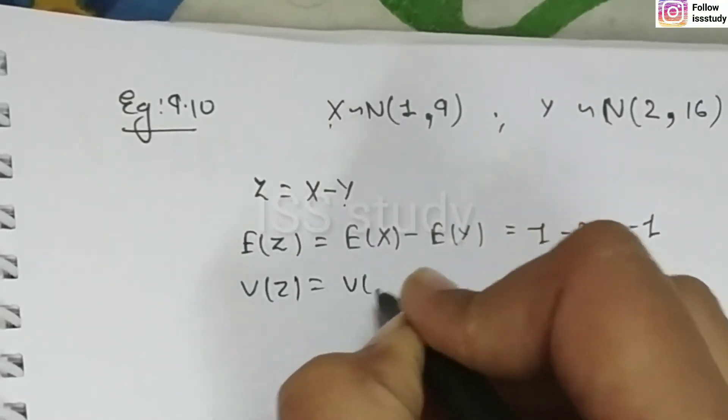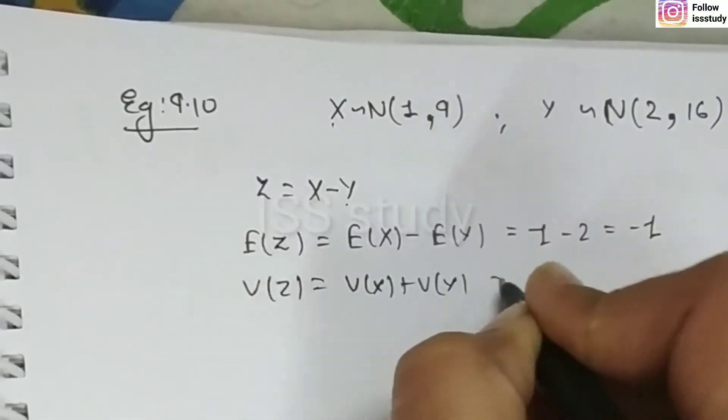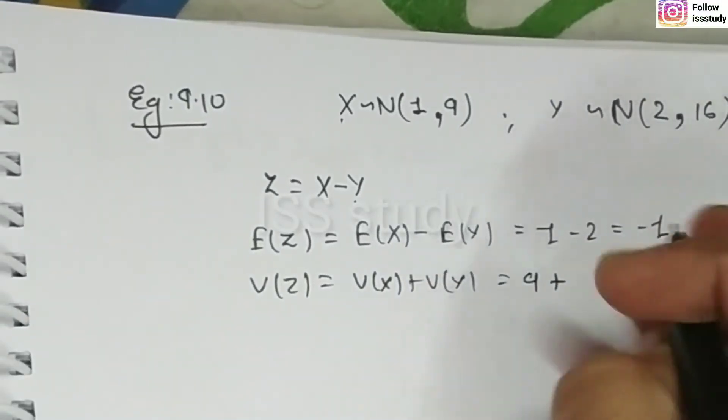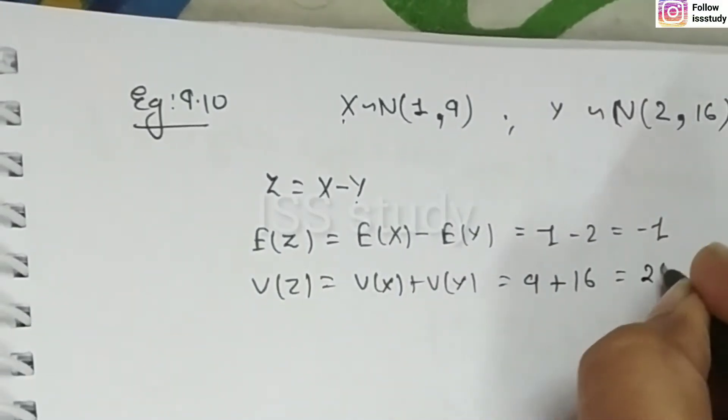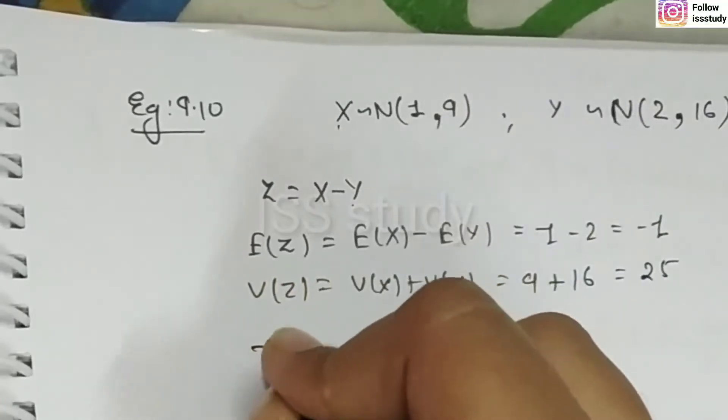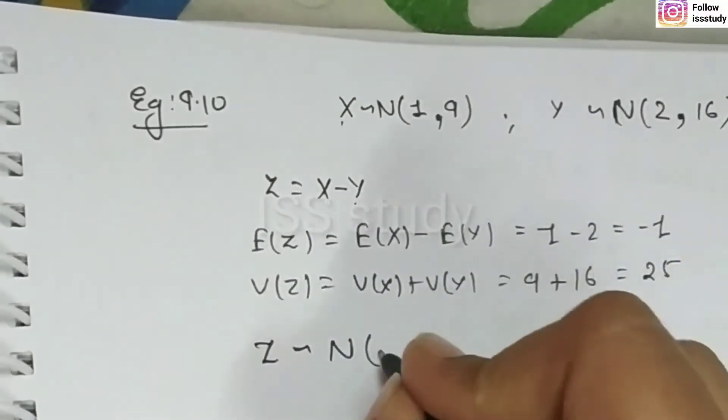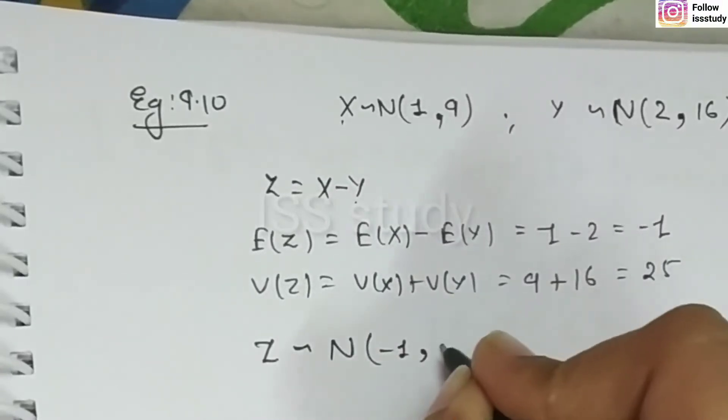So, if we find the variance of z, then we find the variance of x plus variance of y. Variance of x is 9 plus variance of y. Variance of y is 16. So, 9 plus 16 is 25. This means that we can say that z will follow the normal distribution with mean minus 1 and variance is 25.